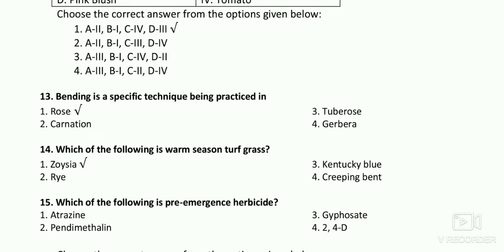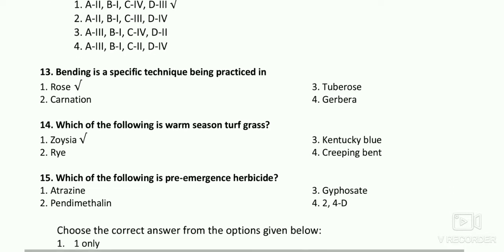Which of the following is a warm season turf grass? Most Zoysia species are suitable for tropical conditions — Zoysia japonica (Korean grass), Zoysia matrella (Manila grass), Zoysia tenuifolia. These are suitable for tropical conditions. The right answer is Zoysia. Kentucky bluegrass, Festuca, and Agrostis are suitable for cold climatic conditions.